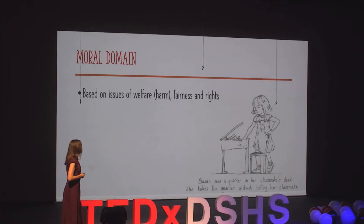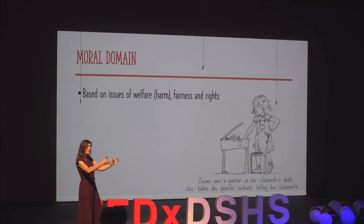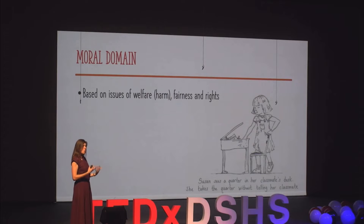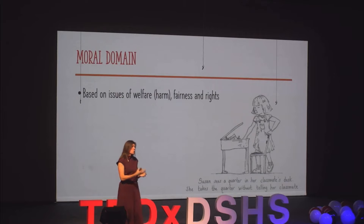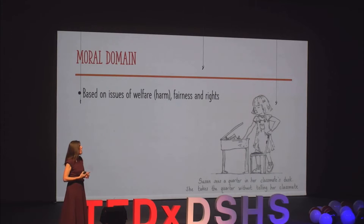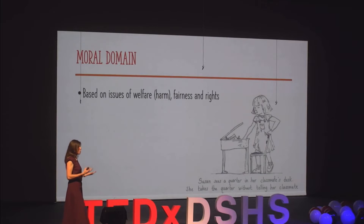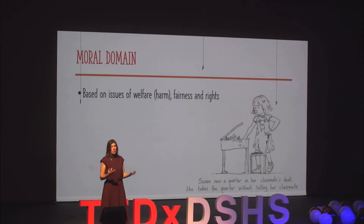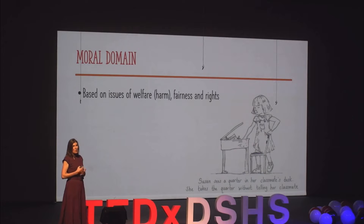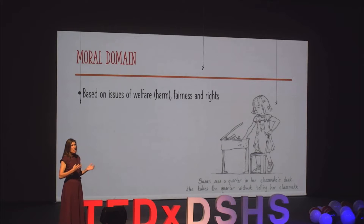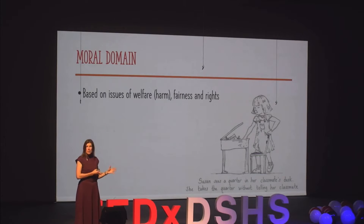Starting with the moral domain — in this category, we think about actions surrounding issues of welfare and harm. This can be physical harm, like pushing someone or tripping them, or psychological harm, like teasing or bullying. The moral domain also focuses on issues of fairness, such as cheating or plagiarizing, and also rights. The story card related to Susan is an example of an event that would occupy this moral domain.